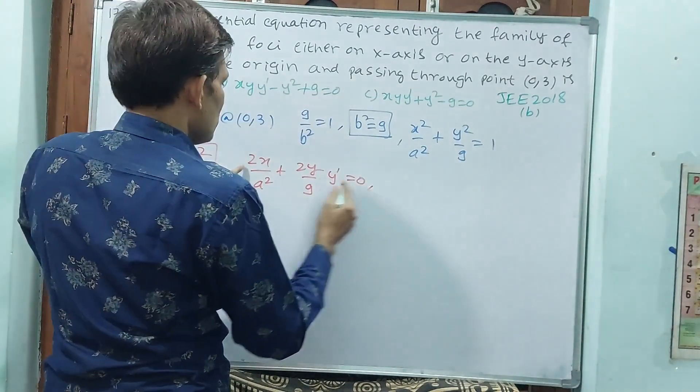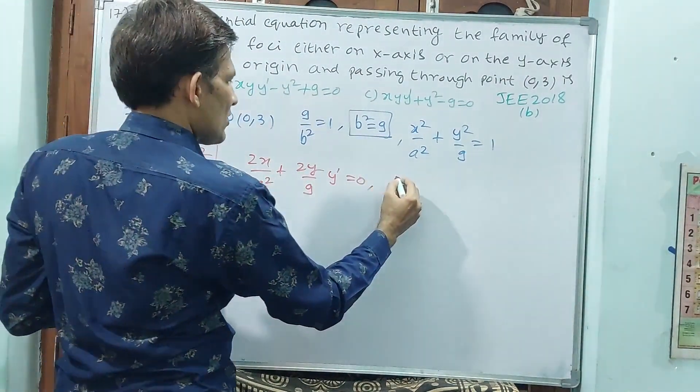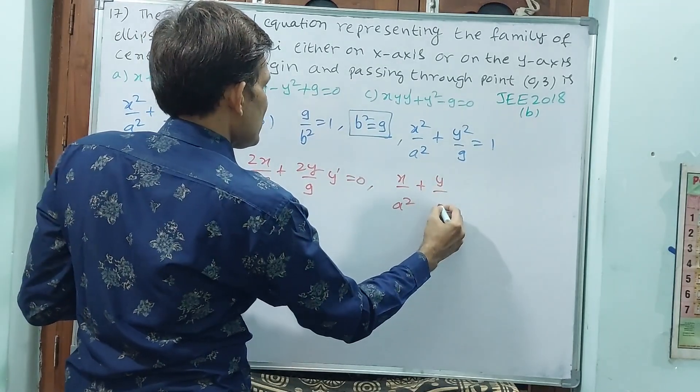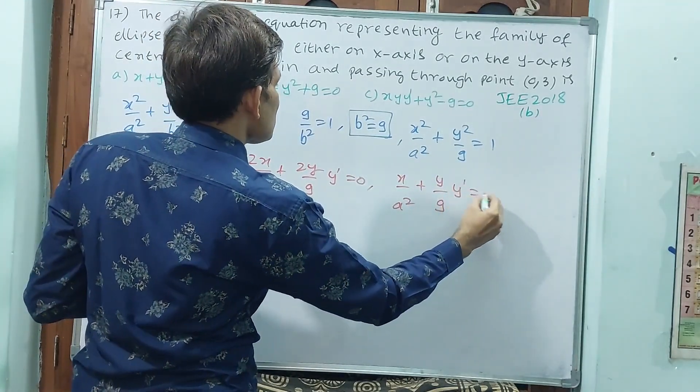Now, remove 2, that means take 2 to that side. Automatically, x by a square plus y by 9 into y-dash is equal to 0.